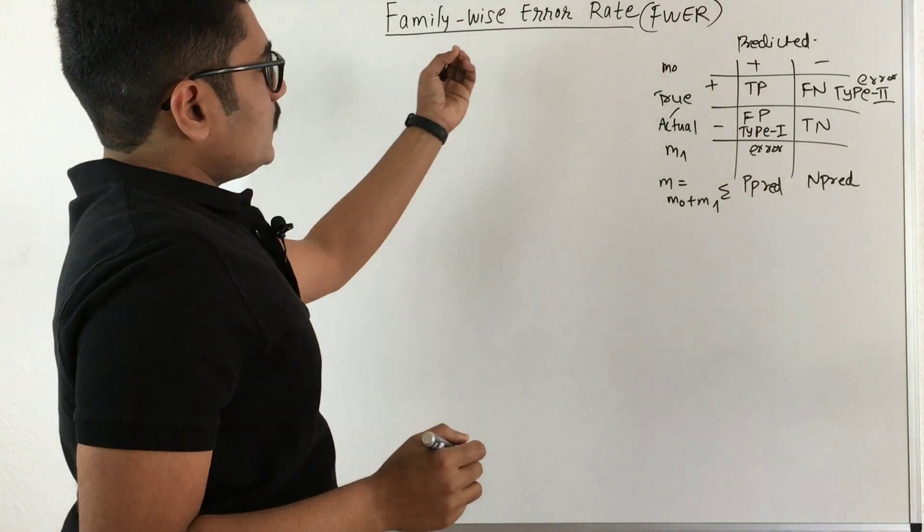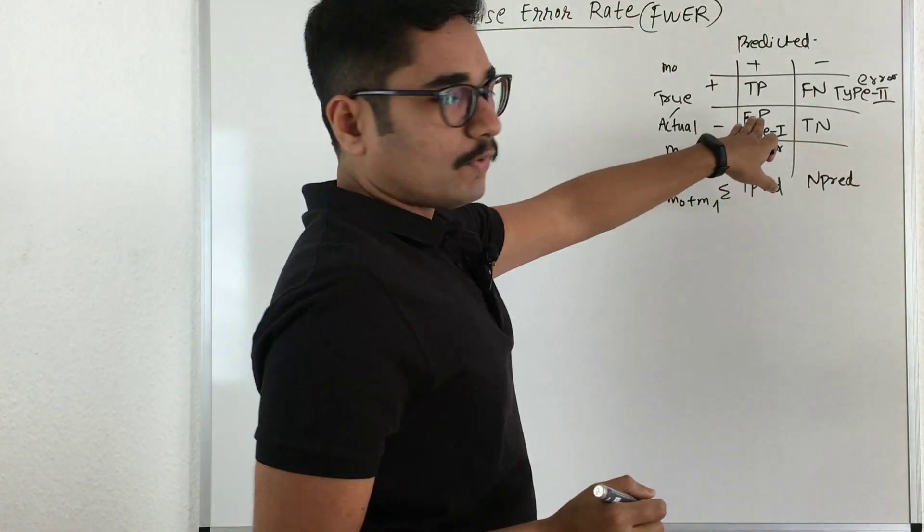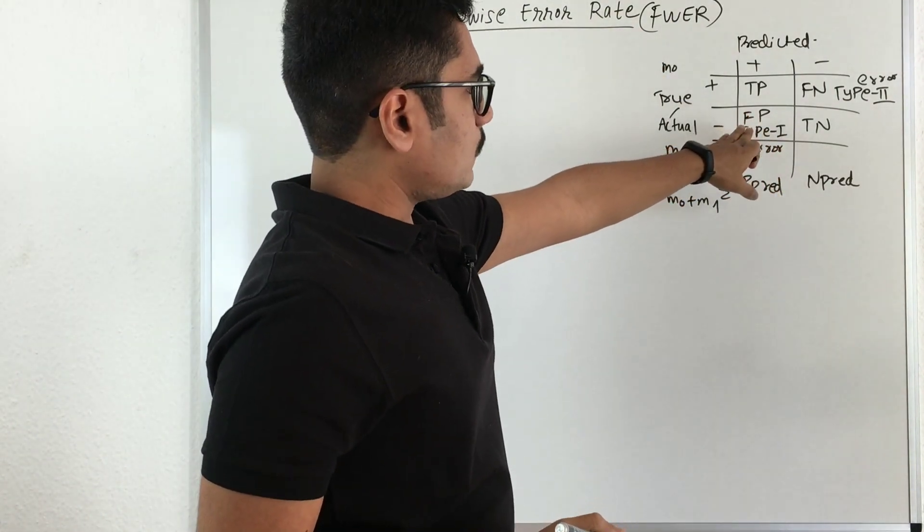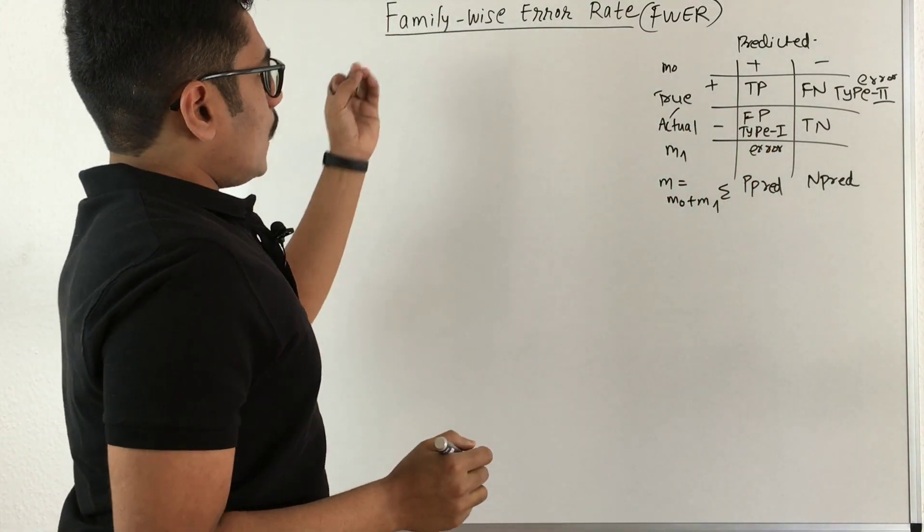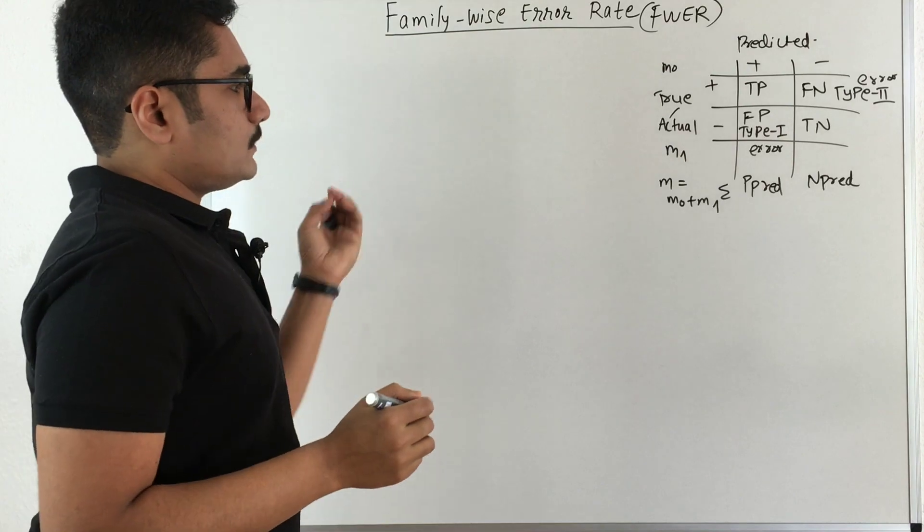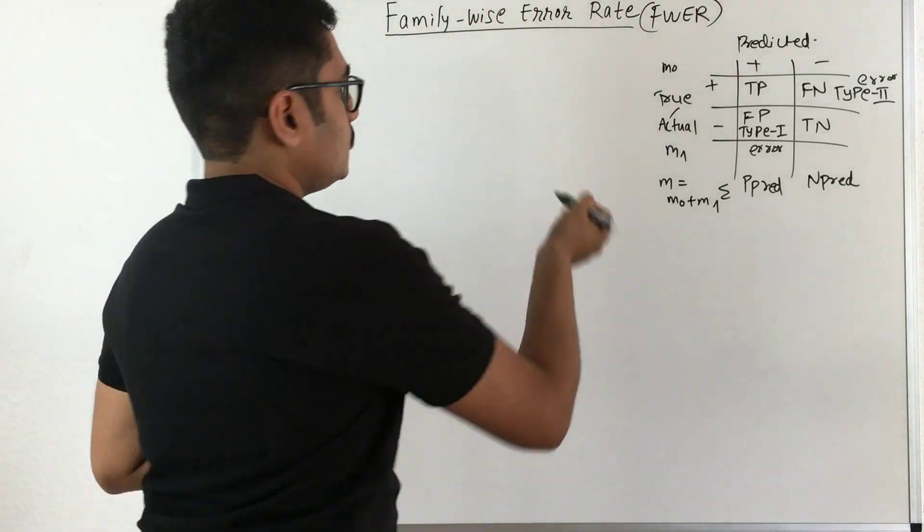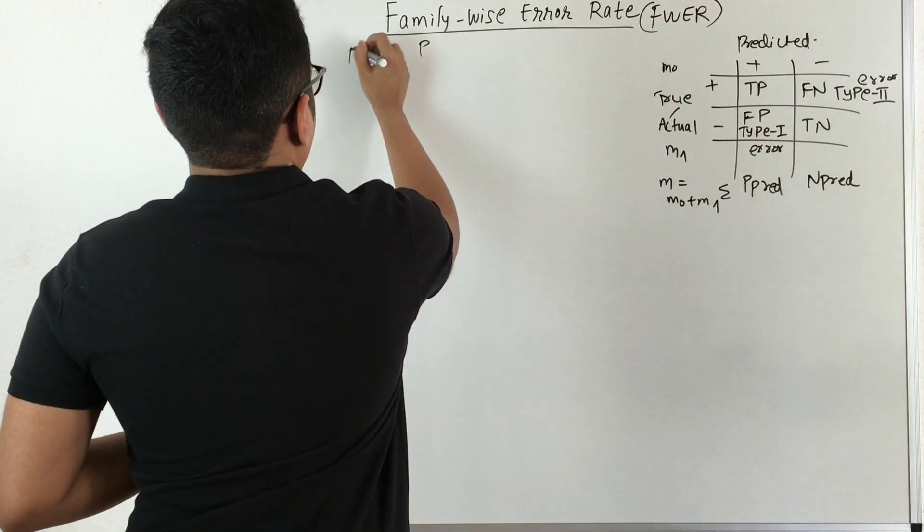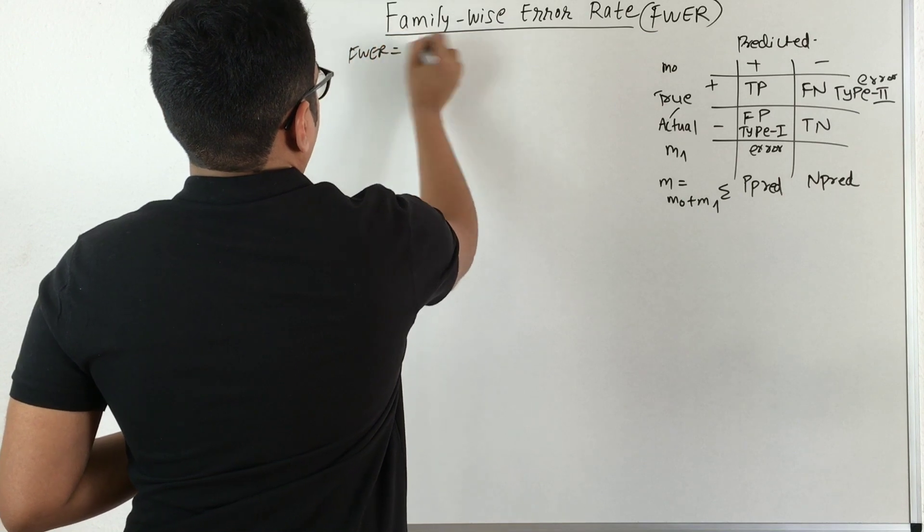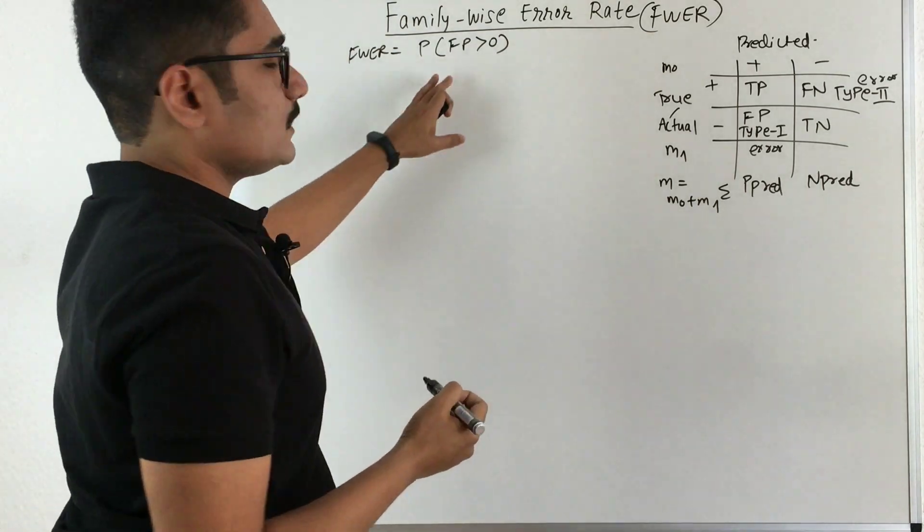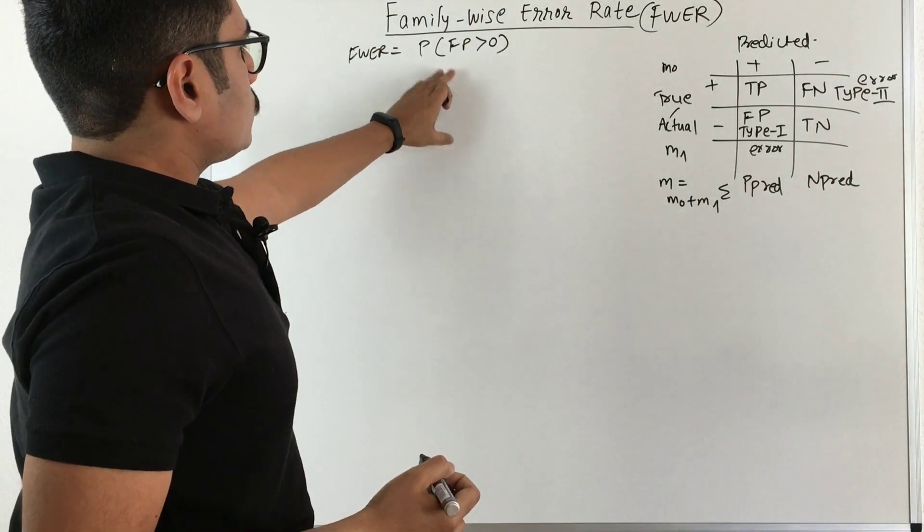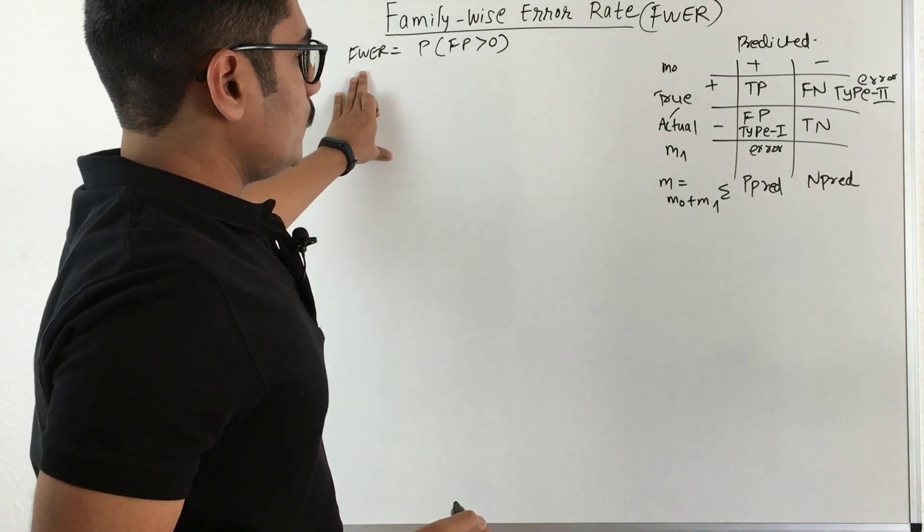Now family-wise error rate corresponds to this false positive class. So this is the family we are considering, that is false positive. So how do we define false positive or family-wise error rate? That is the probability of observing at least one false positive that is greater than 0. So this is how we define FWER.